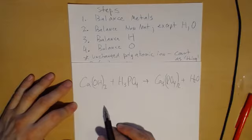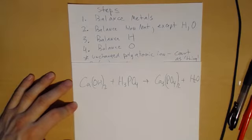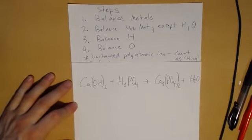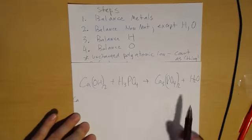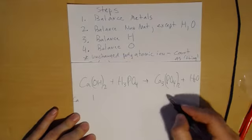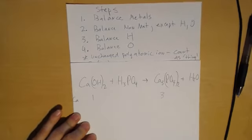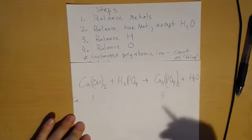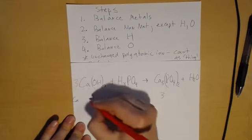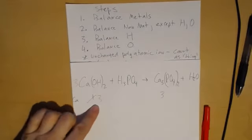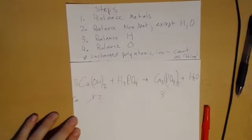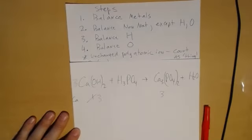Let me get the text box up to show the elements underneath. So underneath calcium — the metal — there's no other metals, so I have one and three. What am I going to do? I would put a three in front of that calcium, so now they're both three.